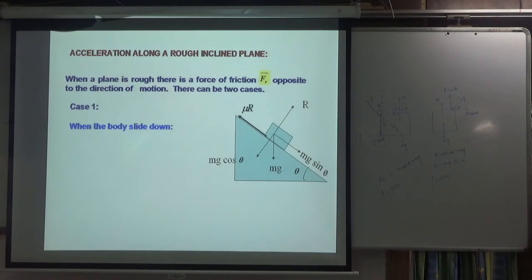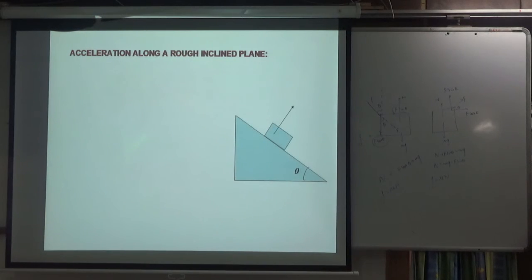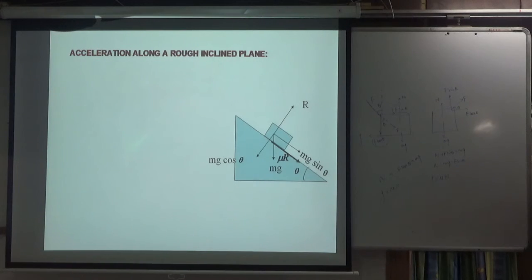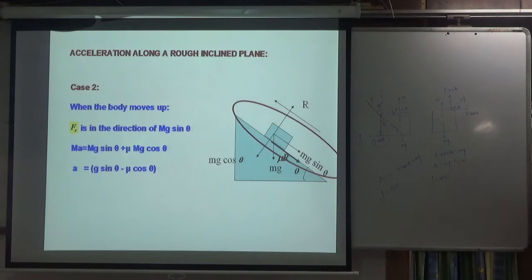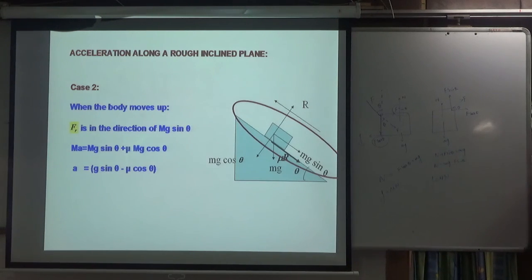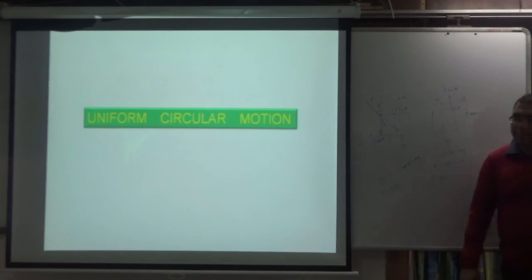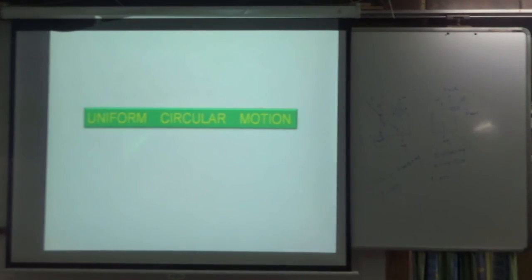For acceleration along a rough inclined plane: the components are mg cos θ and mg sin θ. When the body goes down, friction acts up (opposing motion); when the body goes up, friction acts down. In each case, the net force equals mass times acceleration. Thank you.